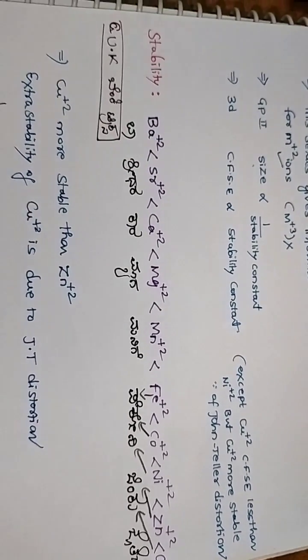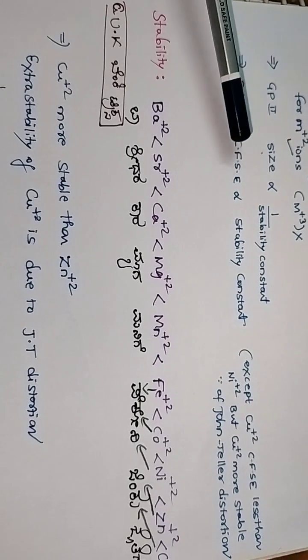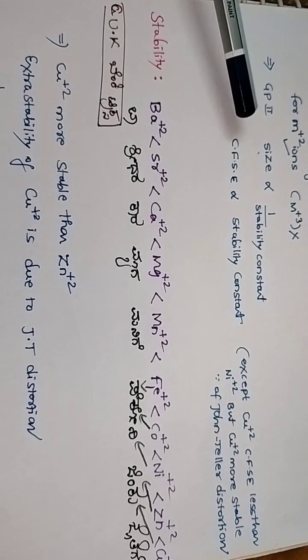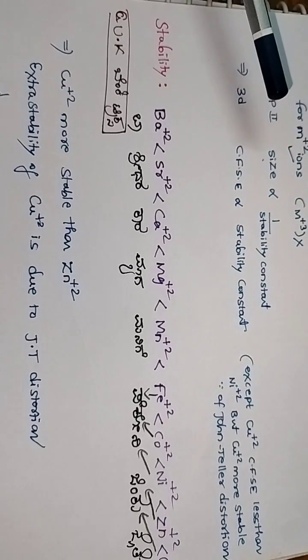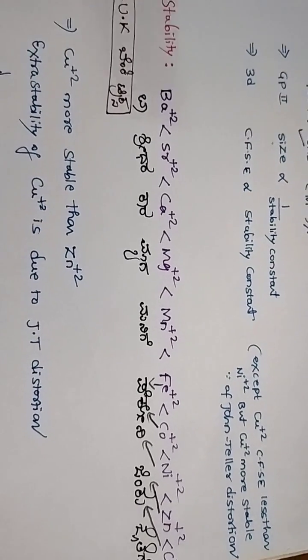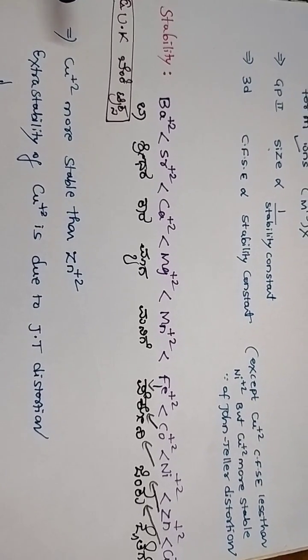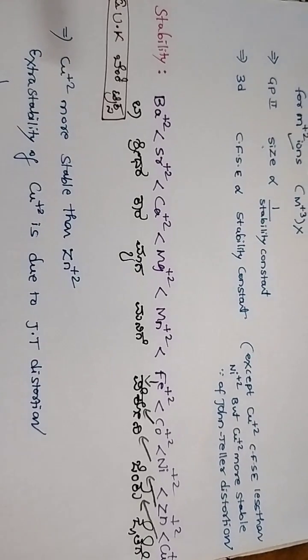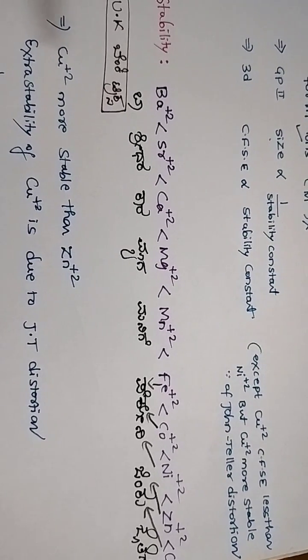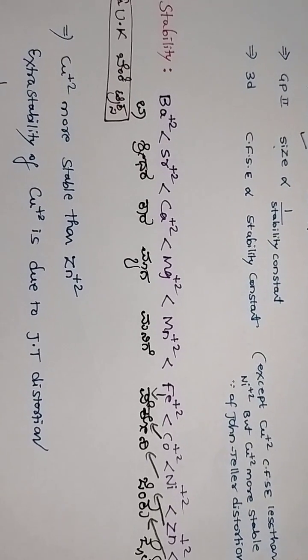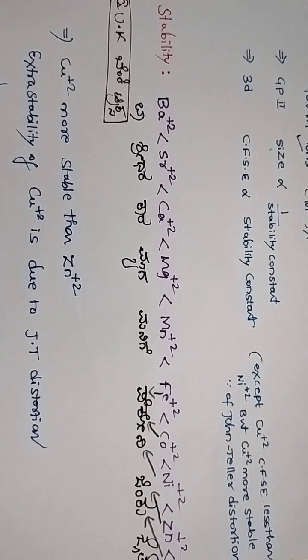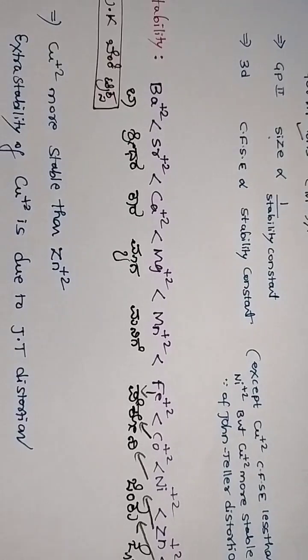Here, actually according to CFSE, zinc CFSE is less than copper, but stability-wise copper is higher. That's because copper 2+ is more stable than zinc 2+ because of the Jahn-Teller distortion taking place in copper. This video is only for the trick. The theory part explanation I will upload in the next video.